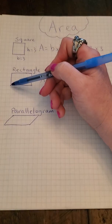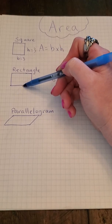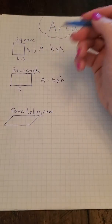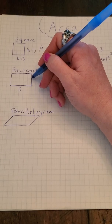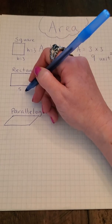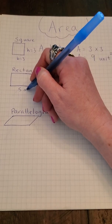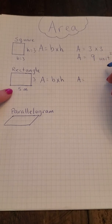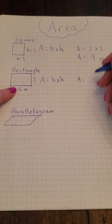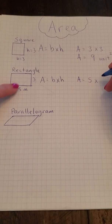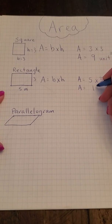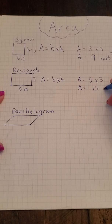Count the base: one, two, three, four, five. It's five units long and one, two, three units high. This time we'll call it meters. So area equals base times height. The base is five, the height is three. So the area of this rectangle would be 15 meters squared.